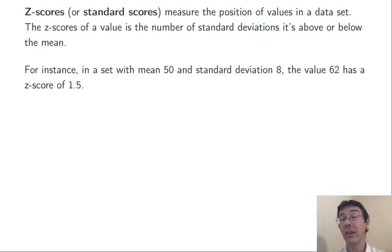For instance, if you have a set with a mean of 50 and a standard deviation of 8, then a value of 62 has a z-score of 1.5, because 62 is 12 points over the mean, and 12 points is 1.5 standard deviations.